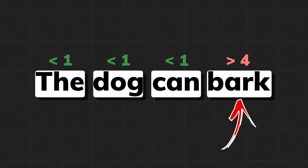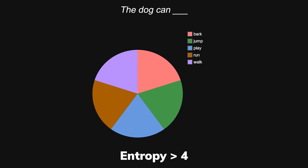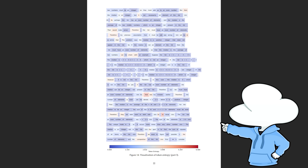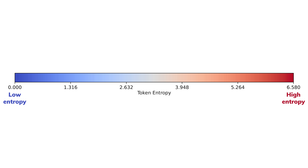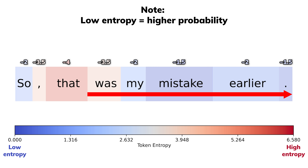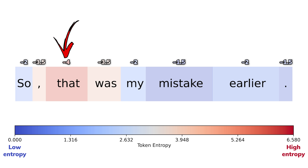So with those high-entropy spikes, researchers are able to locate where the model is thinking the most, because this pivotal point usually determines what comes next. As you can see in the visualization — where blue is low entropy and red is high entropy — most tokens that come after a slightly red token are all blue, implying the trajectory is mostly decided by the red tokens, as the blue ones were really easy to determine. Newer RLVR methods exploit this property to turn the general reward into a finer learning signal.